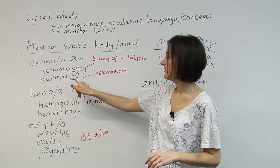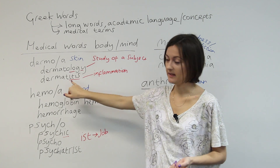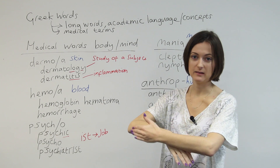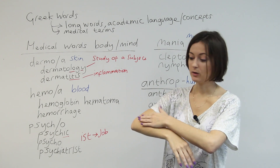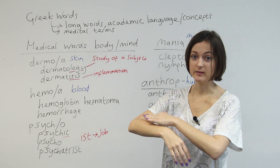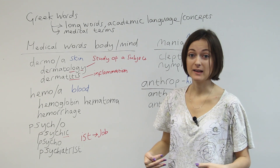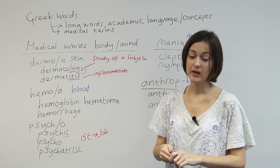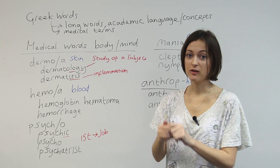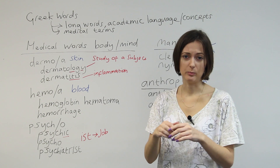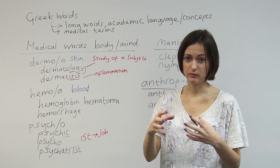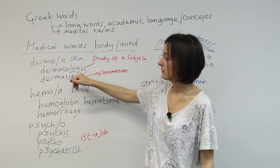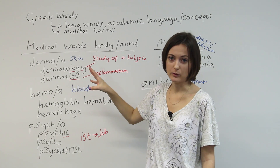A different skin problem is dermatitis, and the '-itis' part means inflammation — it could be swollen skin or could be inside your body. If it's a problem with your bones, you get a disease called arthritis, which older people usually get. It's quite painful and difficult to move their fingers and things like that. So these are examples of medical words where you can sometimes get a sense of what one part means and maybe guess the other.